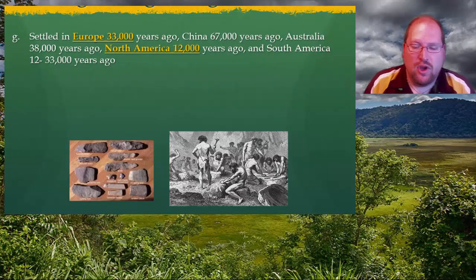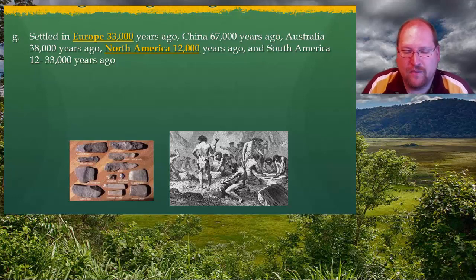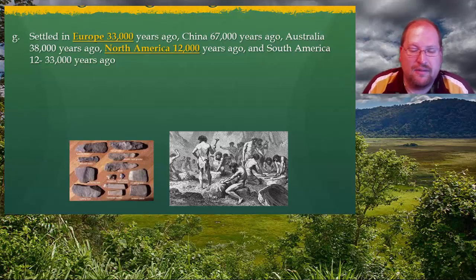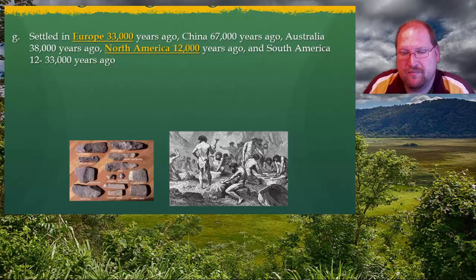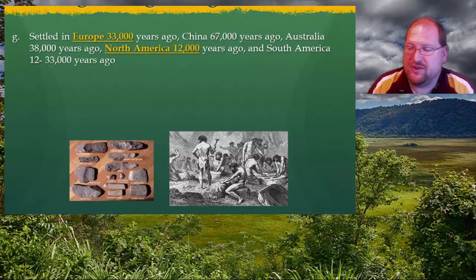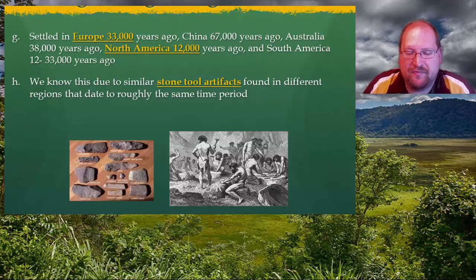As far as we can tell, humans began settling Europe around 33,000 years ago; China around 67,000 years ago; Australia around 38,000 years ago; North America around 12,000 years ago; and South America between 12,000 and 33,000 years ago. Some of these time frames vary based upon known archaeological facts and assumptions. This is based on what archaeologists have found with their evidence, including similar stone tool artifacts found in different regions that date to roughly the same time period.